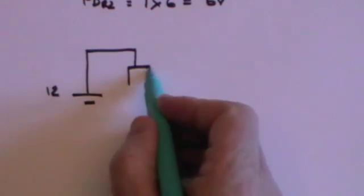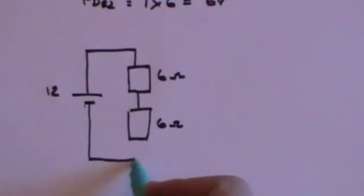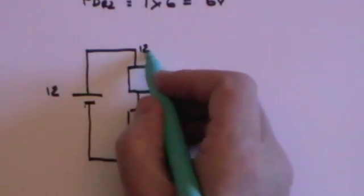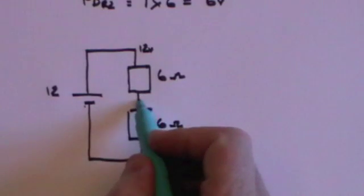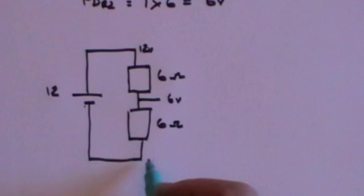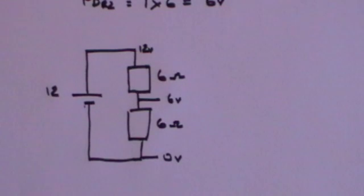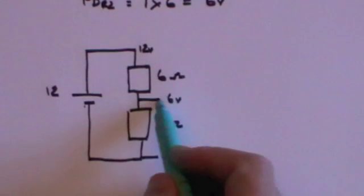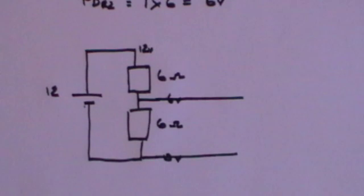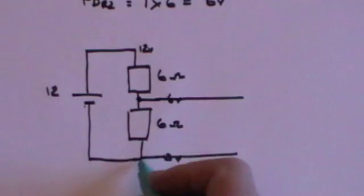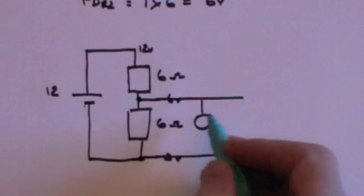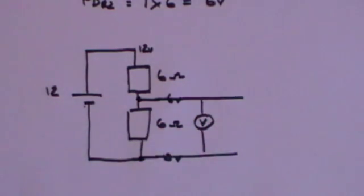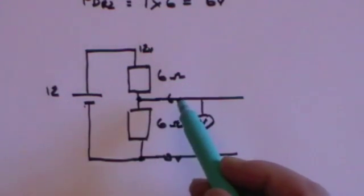Let me redraw that diagram on its side, as that's the way it's usually presented. Here's the 12 volt battery, here is R1 which is 6 ohms, and here is R2 which is 6 ohms. This point is at 12 volts, you drop 6 volts across R1 so this is now 6 volts, then you drop a further 6 volts across R2 and you're now at 0 volts. If you take two wires from those two points and put a voltmeter across there, what voltage will you read?